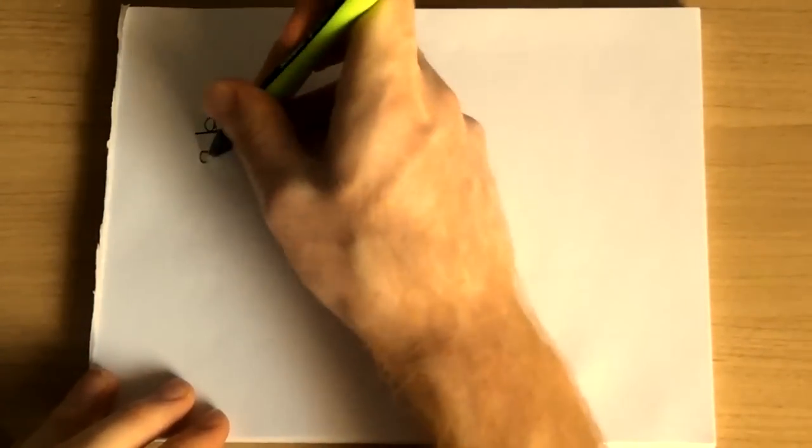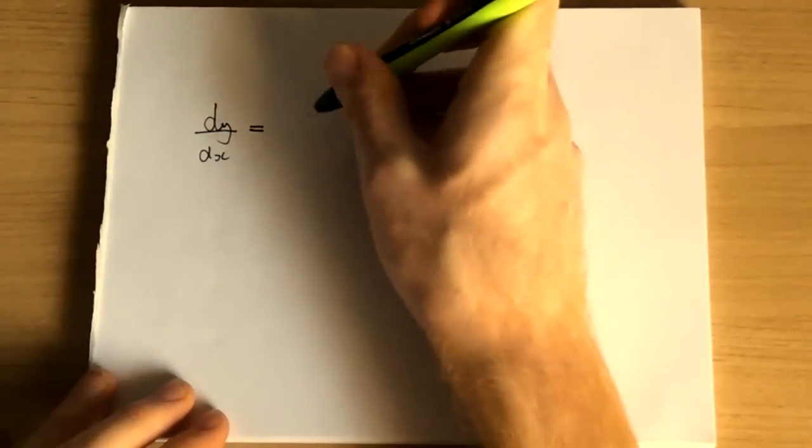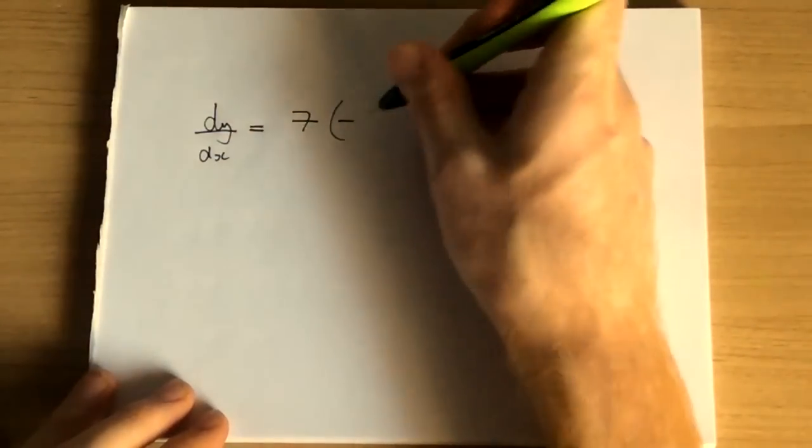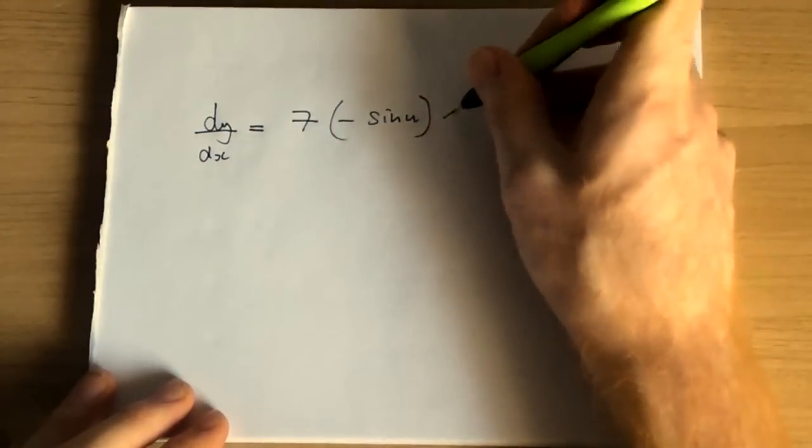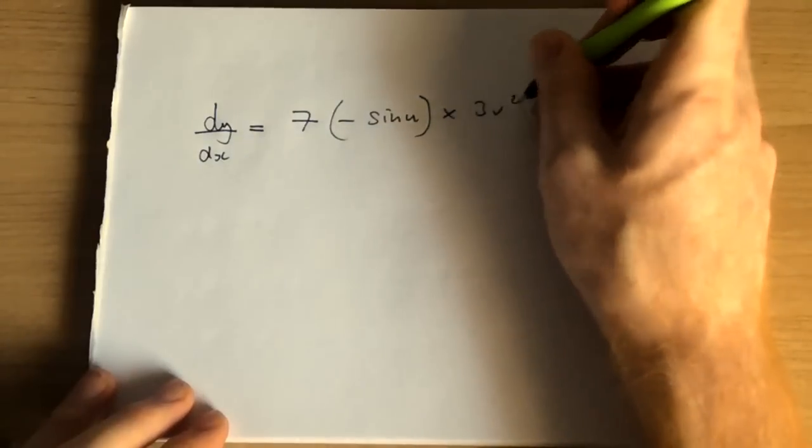Multiplying these together, we have that dy/dx is equal to 7 times minus sin u times 3v squared.